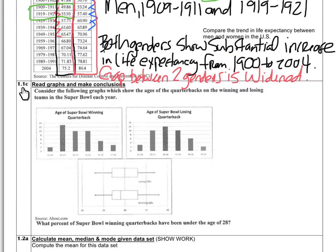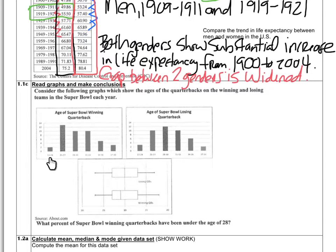Learning Objective 1.1c asks us to read graphs and make conclusions. Consider the following graphs showing the age of quarterbacks on winning and losing teams in the Super Bowl each year. We have the age of Super Bowl winning quarterbacks and the age of losing quarterbacks. This is a bar graph — not a histogram because the bars aren't touching — with intervals from 22 to 24, 25 to 27, and so forth, showing count. We also have a box and whisker plot.